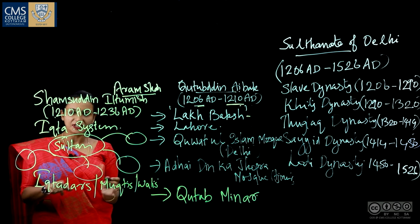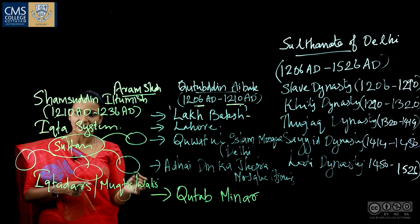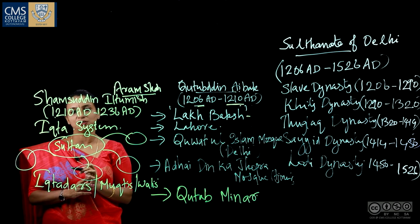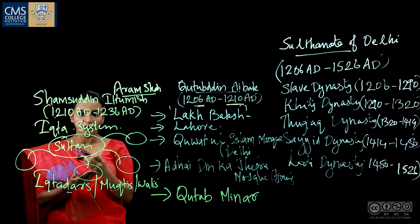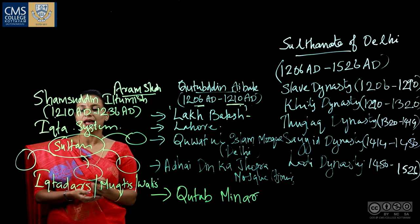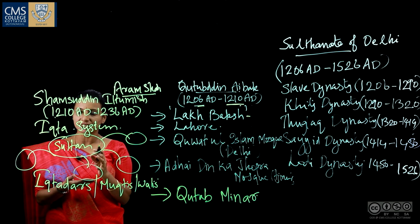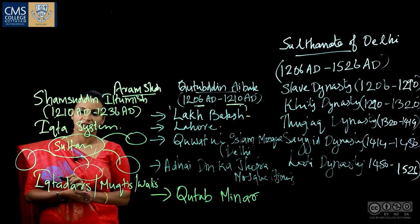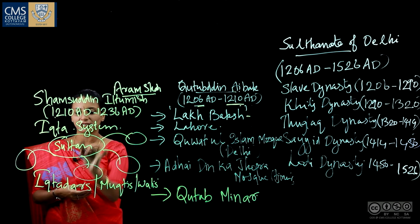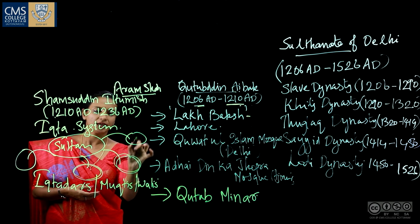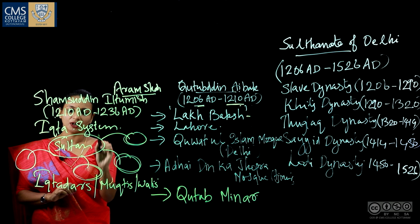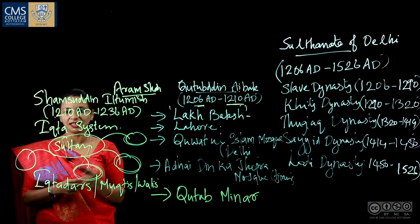The duties of the Iqtadars, Muktis, or Walis were: they collected taxes from the land assigned to them, kept an amount for army maintenance and their own expenditure, and remitted the remaining balance to the royal treasury. They also maintained law and order in their assigned provinces.